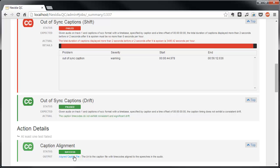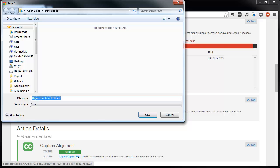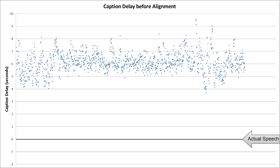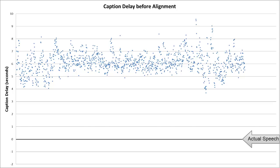Clicking the Aligned Caption File link downloads the aligned captions. Looking at a chart of the caption delay over the course of the file, we can see that most of the caption blocks were five to eight seconds late, which is typical of live captions. After alignment, most captions exhibit no delay, and nearly all display within a second of the associated speech.